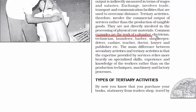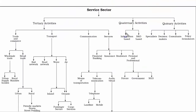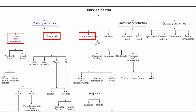Some examples of tertiary activities include the work of a plumber, electrician, technician, launderer, barber, shopkeeper, driver, cashier, teacher, doctor, lawyer, publisher, etc. Now let's look at the types of tertiary activities. This chapter is going to go in depth on this topic, so gear up. If you look at the chart, it shows the basic classification of all tertiary as well as quaternary activities. Trade, transport, communication, and services are some of the well-known tertiary activities.